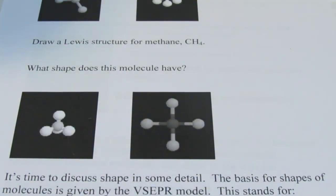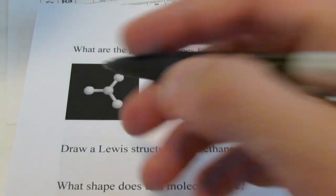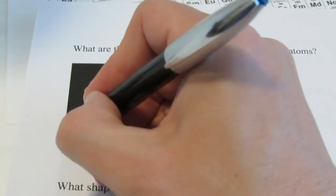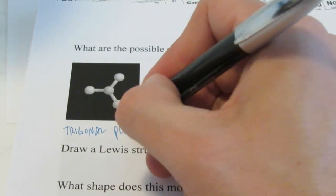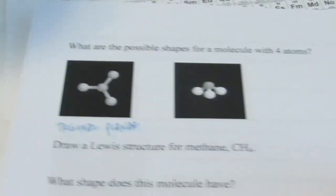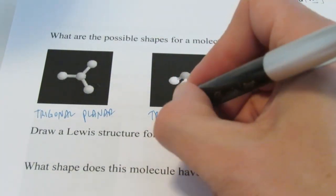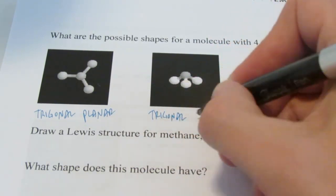And we call that a trigonal pyramid. So, those are our two options. I'll put pictures on the next page for you. So, once again, this guy up here would be called trigonal planar. And this one over here would be trigonal pyramid.